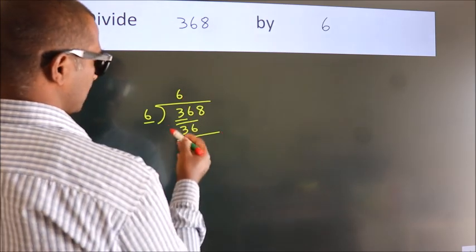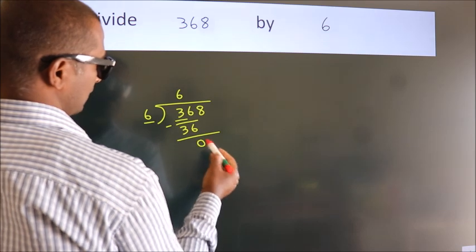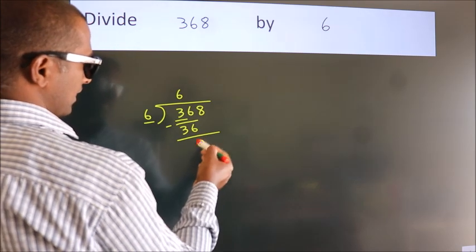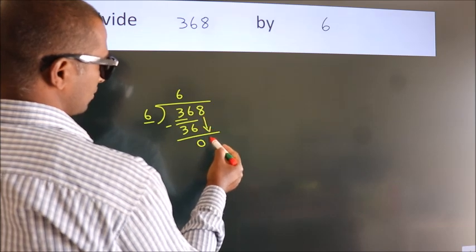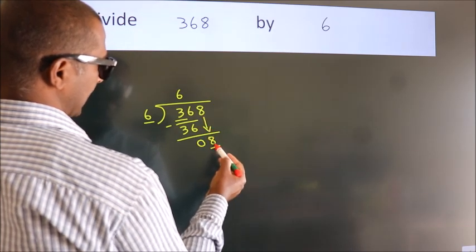Now we should subtract; we get 0. After this, bring down the next number, so 8 comes down.